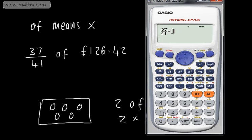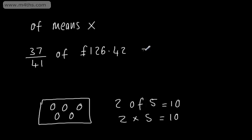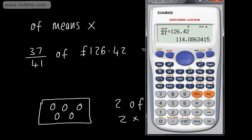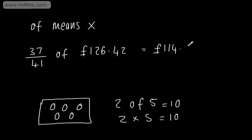So, we're going to multiply this by 126.42 and that is going to give us now 114.086. So, we could say now that this is going to be equal to 114 pounds and to the nearest pence, it looks like nine pence. So, we can see now that this isn't going to give us a nice answer, but we can simply put it for a calculator.